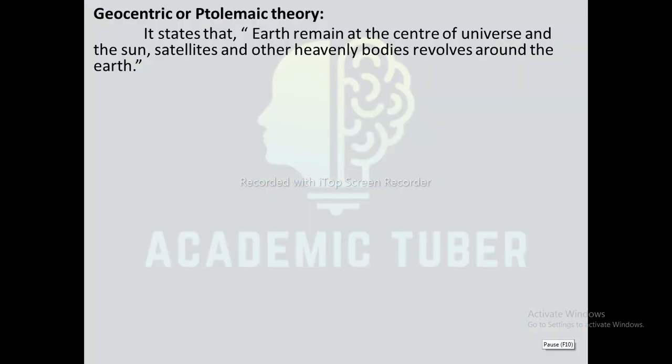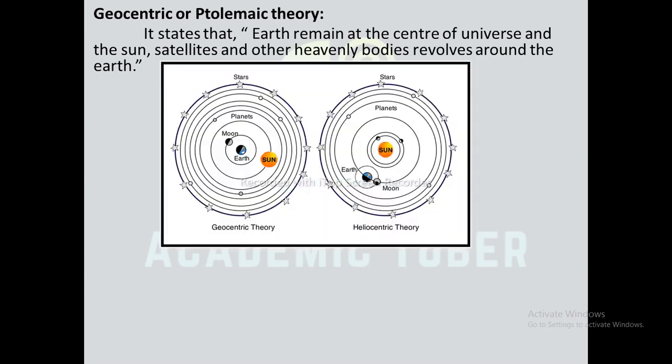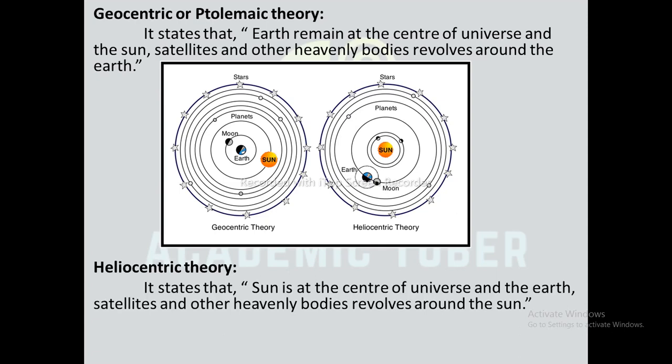Geocentric theory says that Earth is at the center of the universe and the Sun, satellites, and other heavenly bodies revolve around the Earth. The word itself gives its definition — geo means Earth and centric means at center. Similarly, heliocentric theory — helio means Sun, centric means at center — says that the Sun is at the center of the universe and the Earth, satellites, and other heavenly bodies revolve around the Sun.